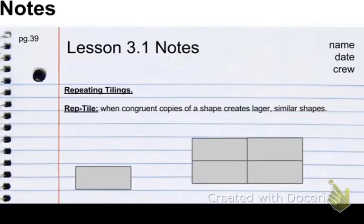So here are the only notes you really need to put in. Make sure to put in the page number so we can reference it later. So we put in Lesson 3.1, then put Name, Date, and Crew in there. And we want to put in Repeating Tilings.